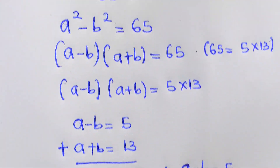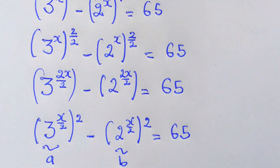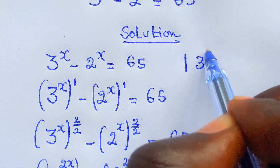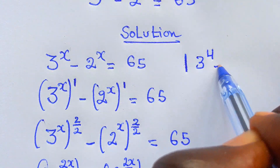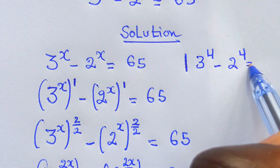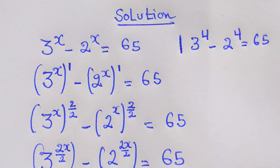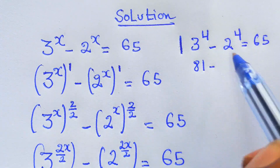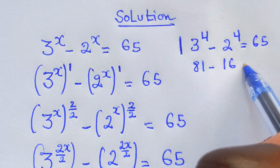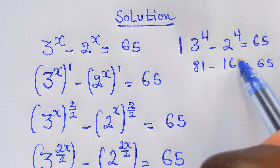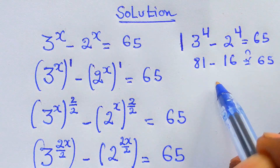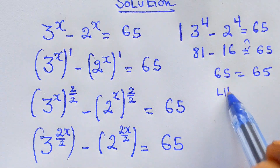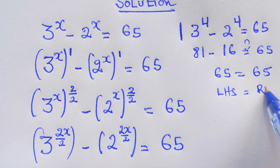Verifying with the original equation: 3 power 4 minus 2 power 4 equals 65. We get 81 minus 16, which equals 65. Left hand side equals right hand side, confirming x equals 4 is correct.